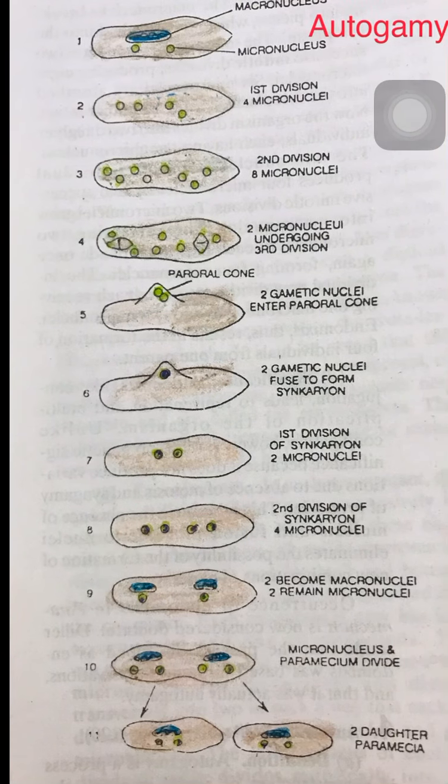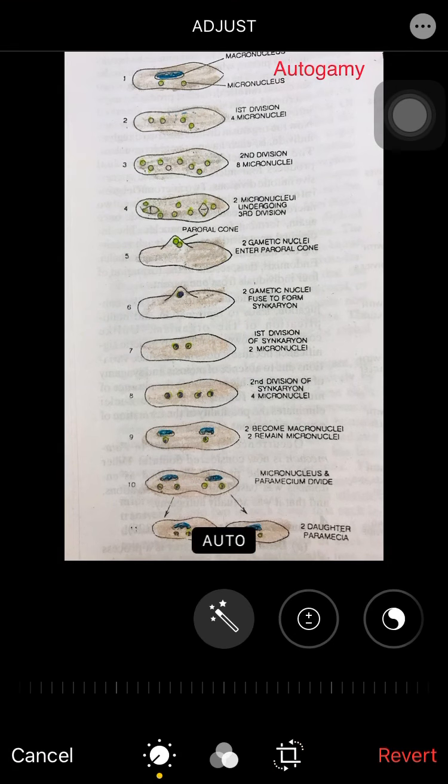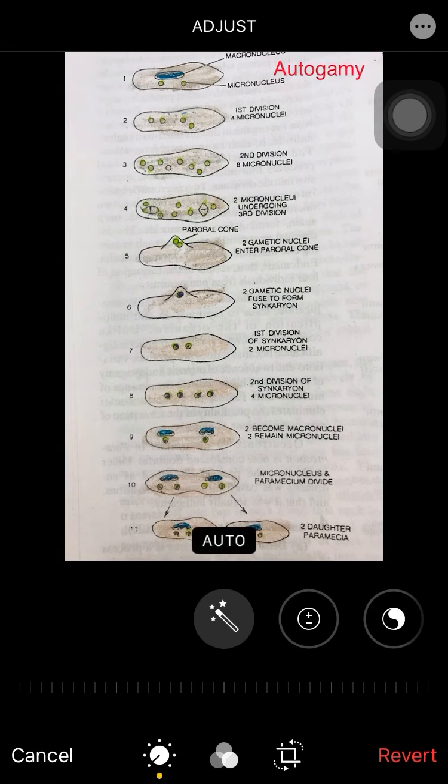Autogamy is said to correspond with self-fertilization in higher organisms. It was discovered by Diller in 1934 in Paramecium aurelia. During this process, let's look at what happens.